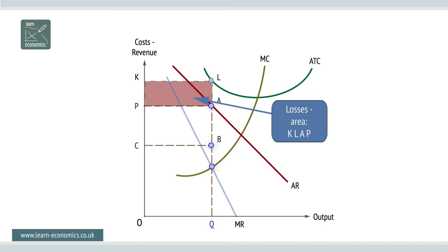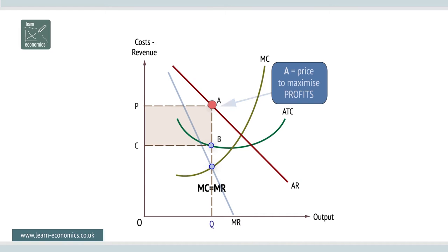Different pricing strategies are possible. A is the price to maximize profits, as marginal cost equals marginal revenue. K is the price to maximize revenue, as marginal revenue is zero. L is the price to maximize sales, which occurs when the firm sells as much as it can without making a loss.